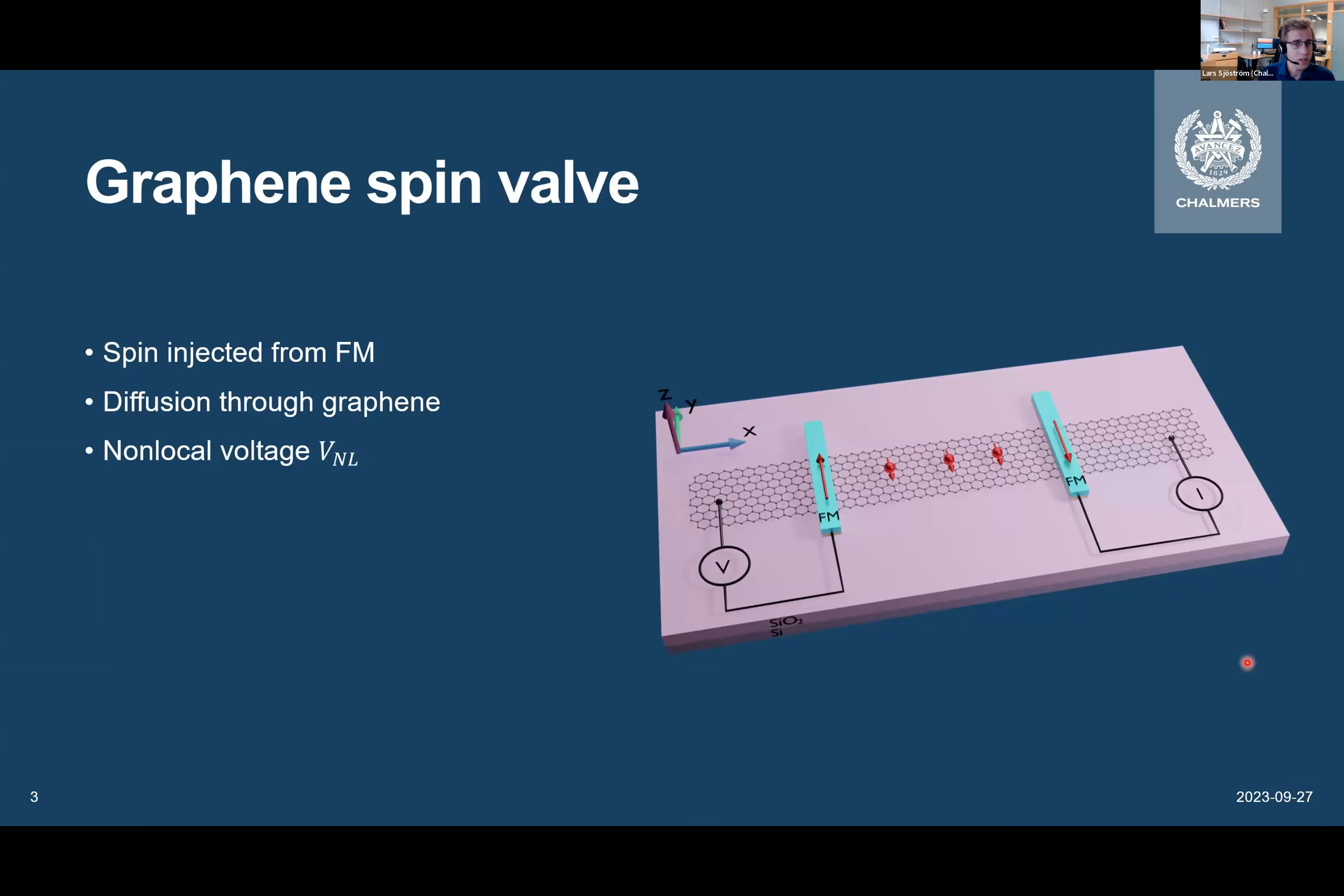For this, we use graphene spin valves. Russell was talking about this in a previous talk today, but I will still go through it briefly. The device basically looks like this, with two ferromagnetic contacts and a graphene channel. Then we pass a current like this, and that allows spin to be injected from this ferromagnetic contact into the graphene channel. Then the spins will be diffusing through the graphene channel and can be detected using this second ferromagnetic contact and non-magnetic reference. So since we're measuring the voltage outside of the current loop, we call this a non-local voltage.